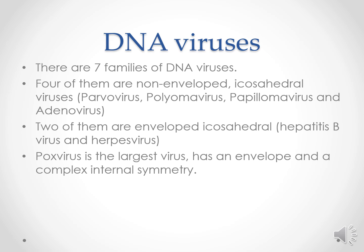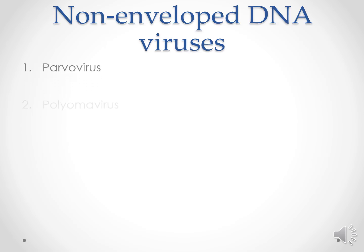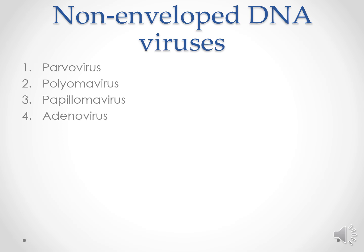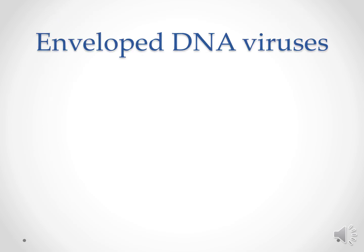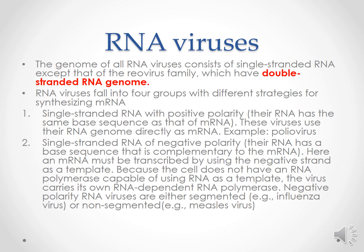Non-enveloped DNA viruses include parvovirus. For example, hepatitis B and herpesvirus are enveloped DNA viruses. Next, RNA viruses: the genome of all these viruses consists of single-stranded RNA, except that of retroviruses which have double-stranded DNA. RNA viruses fall under four groups with different strategies for synthesizing mRNA.